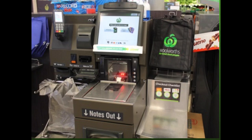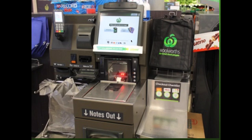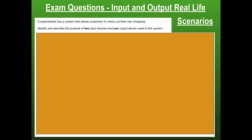We need to identify and describe the purpose of two input devices and one output device. Here is a self-service checkout — look at all the different devices attached: a barcode scanner, a weighing scale with an outer rim, a card machine with a pin pad, a section for taking notes and coins so you can pay with cash, another scale that makes sure you're not putting extra items into the cart, and a touch screen for inputting. Touch screen is both an input and an output device.